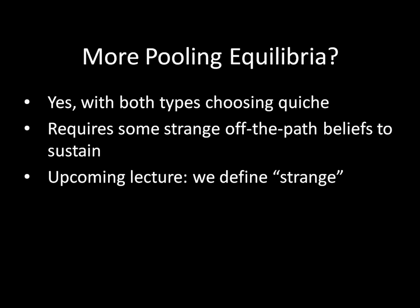It turns out that this game has another set of equilibria in which both types eat quiche. An exercise you can try on your own is to derive those equilibria. However, sustaining them requires some strange off-the-path beliefs. In a later lecture, we will formally define what 'strange' means here, and show why the equilibria from this lecture are more plausible. I hope you enjoyed this lecture, and I hope to see you next time as we continue our lessons on perfect Bayesian equilibria. Take care.